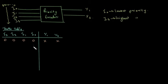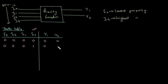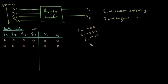Suppose I0 is the lowest priority, so the lowest priority line is active. I0 corresponding output representation is 00. I1 corresponding decimal value 1 is represented as 01. I2 corresponding output is 10, and I3 corresponding output is 11.